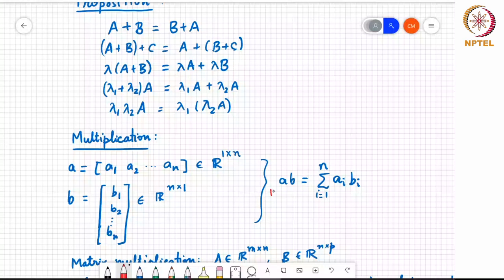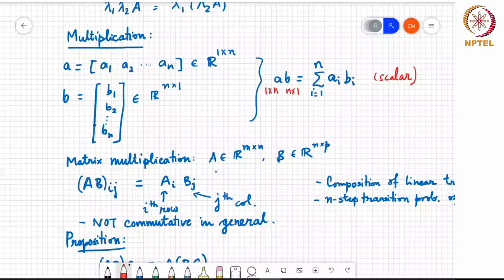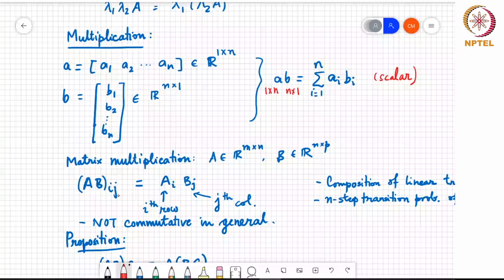So, with this, we can define matrix multiplication. If I have two matrices, A is of size M by N, and B is of size N by P, then their product is a matrix of size M by P, and it is defined such that its i jth entry is equal to the product of the ith row of A with the jth column of B. So, I'll write this here. i goes from 1 to row index, so it goes to M, and j goes from 1 to P.